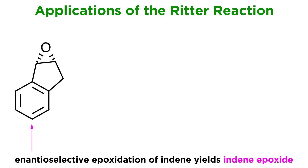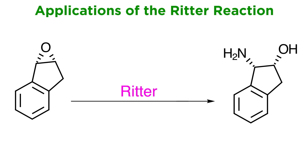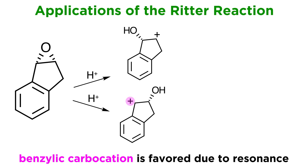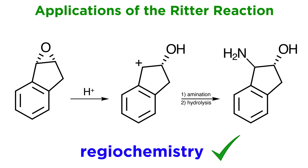One intermediate that was available in good enantiomeric purity was this indene epoxide, available from indene through enantioselective epoxidation, a reaction we will discuss in a future tutorial. The problem thus became: how do we go from this epoxide to the corresponding aminoindenol with regio and stereocontrol? The Merck chemists thought that the Ritter reaction would be a good candidate. The epoxide would open up to form a carbocation under acidic conditions. Of the two possible carbocations, this one seemed favored because it is a benzylic carbocation, stabilized by delocalization onto the benzene ring. It turns out they were right, and the amination occurs only at the benzylic position, so the regiochemistry is all set.